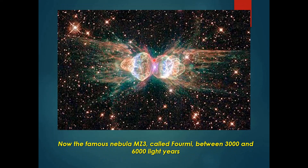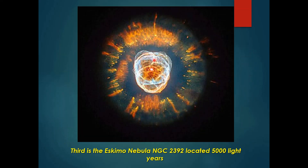Next is the Ant Nebula MZ3, which is around 3,000 to 6,000 light years away. And this is the Eskimo Nebula NGC 2392, which is located 5,000 light years away.